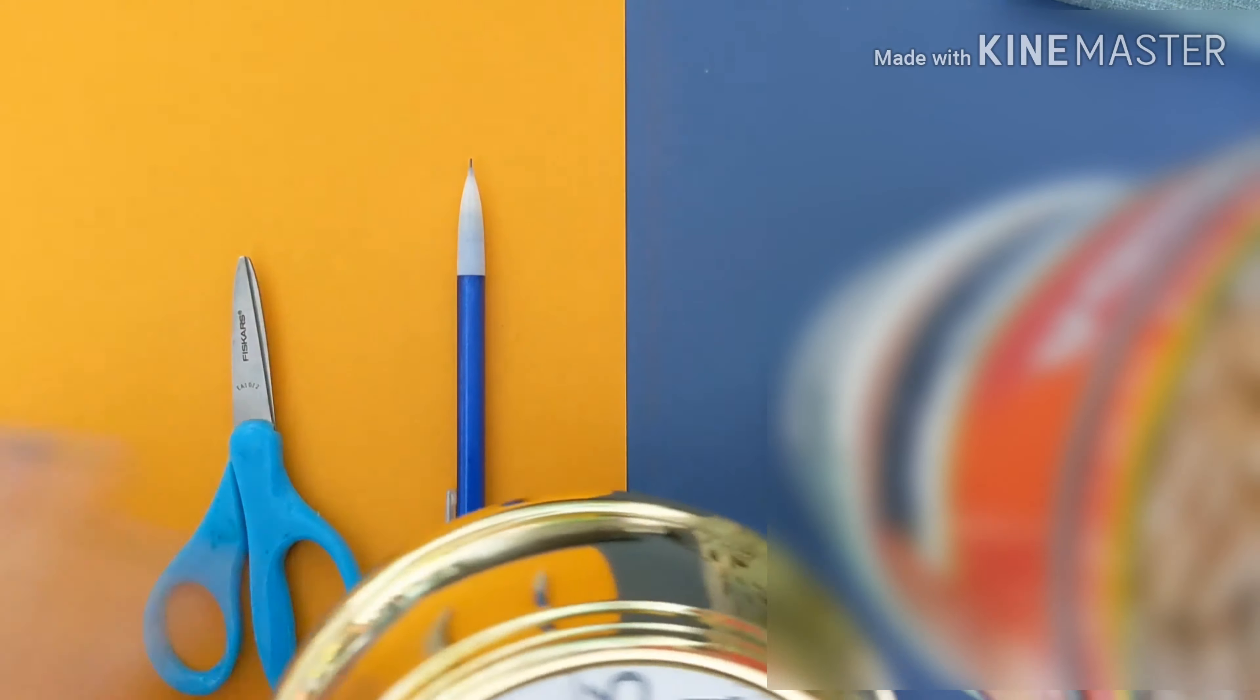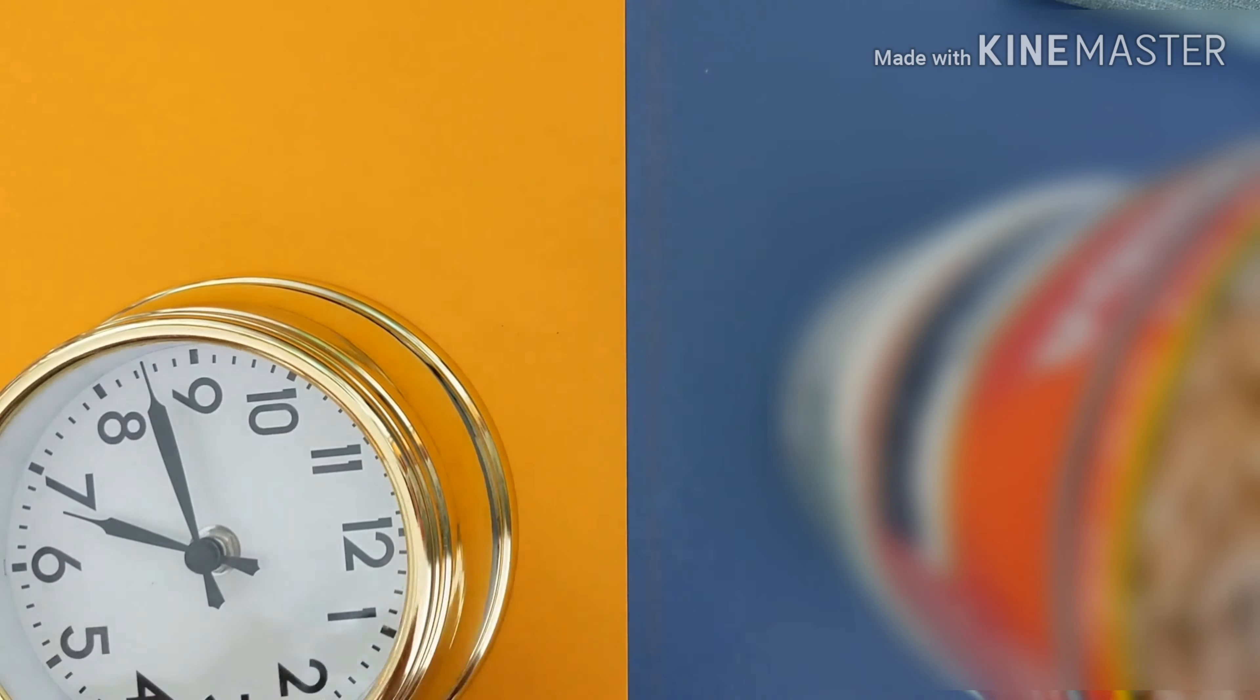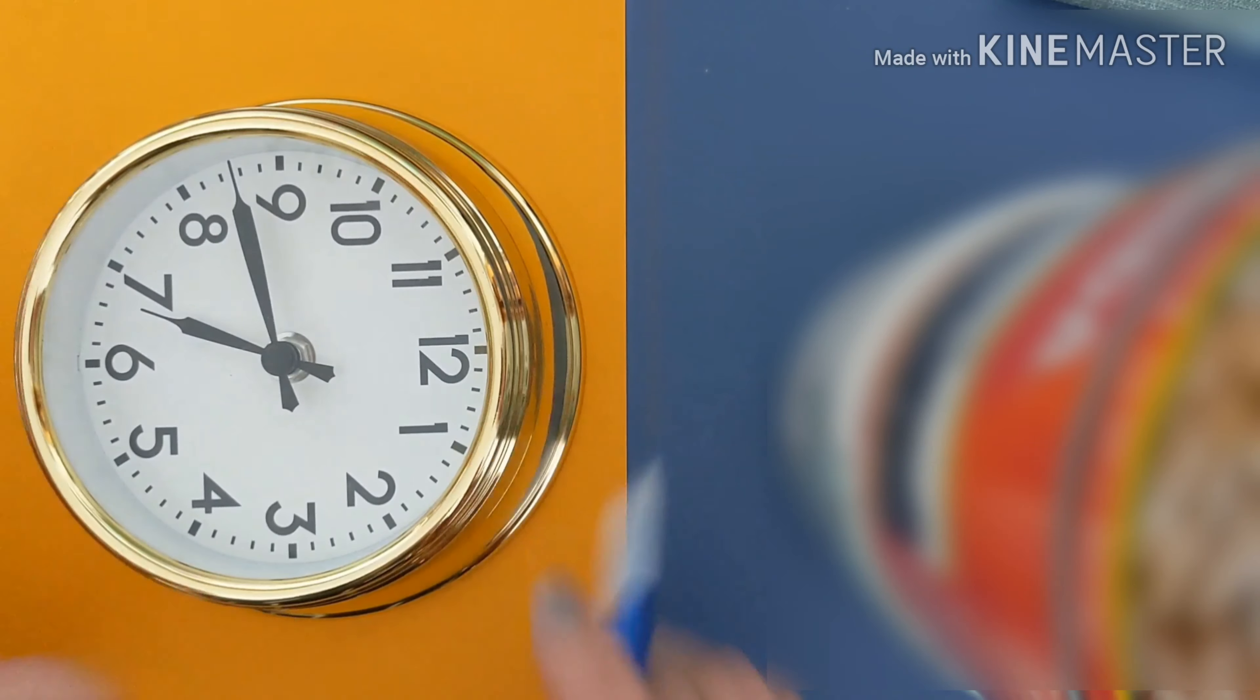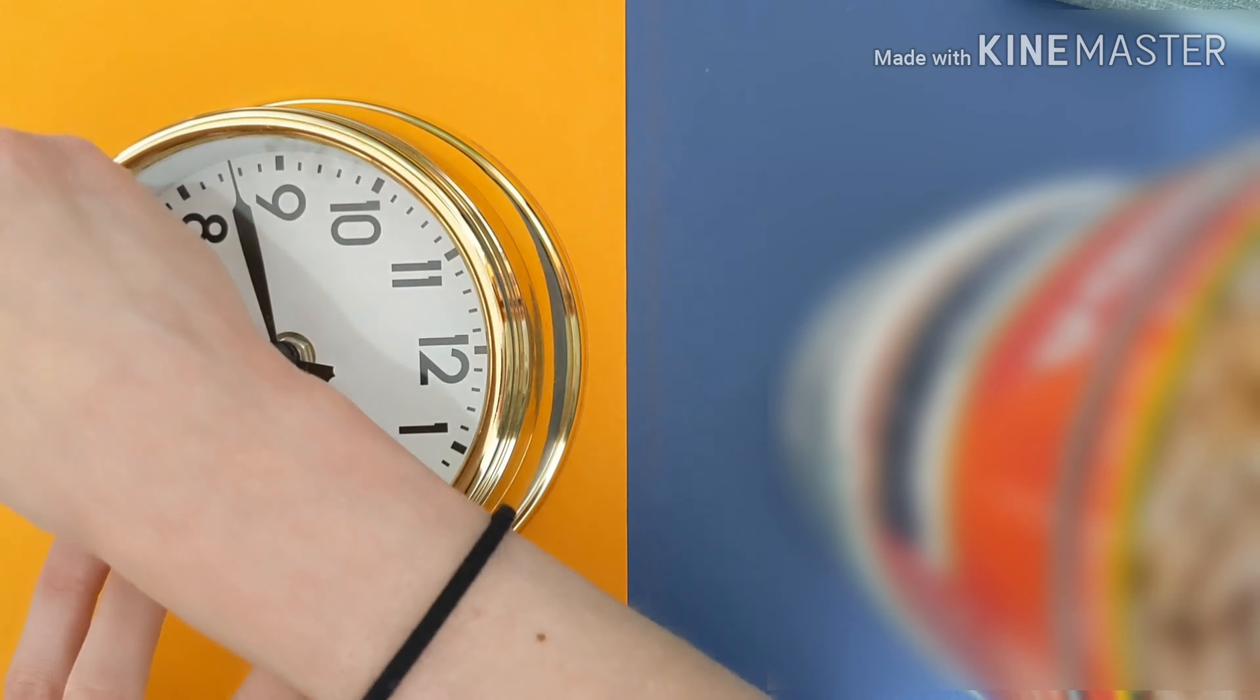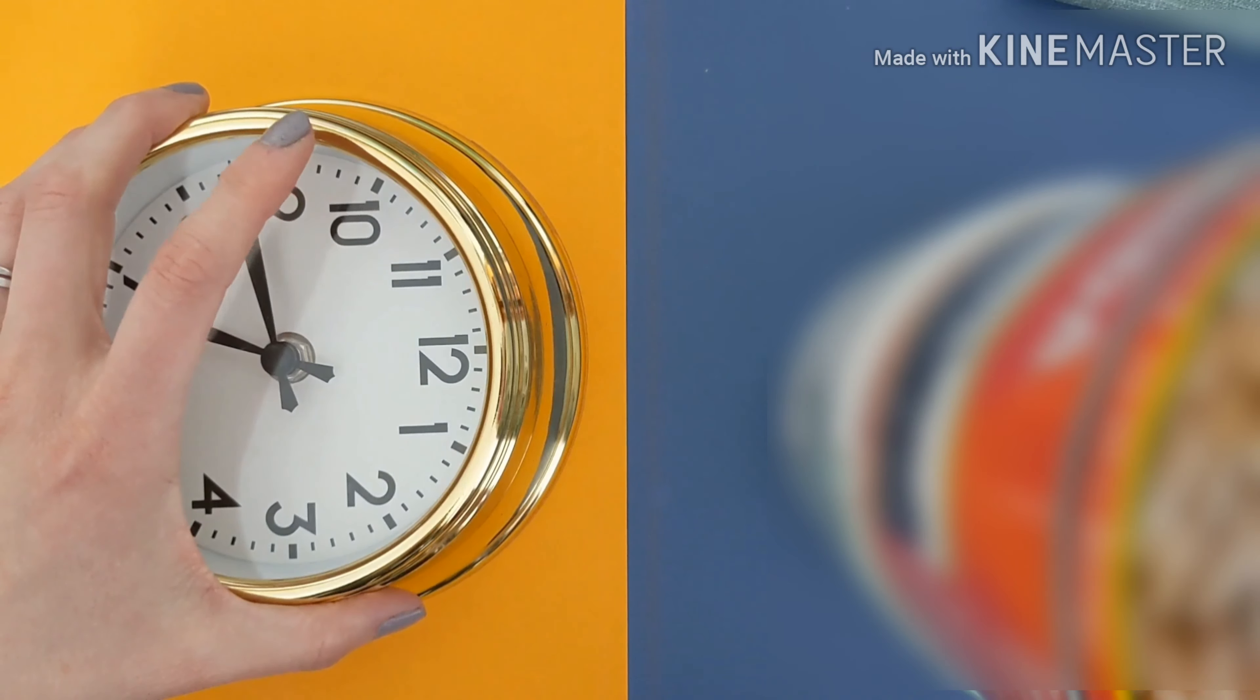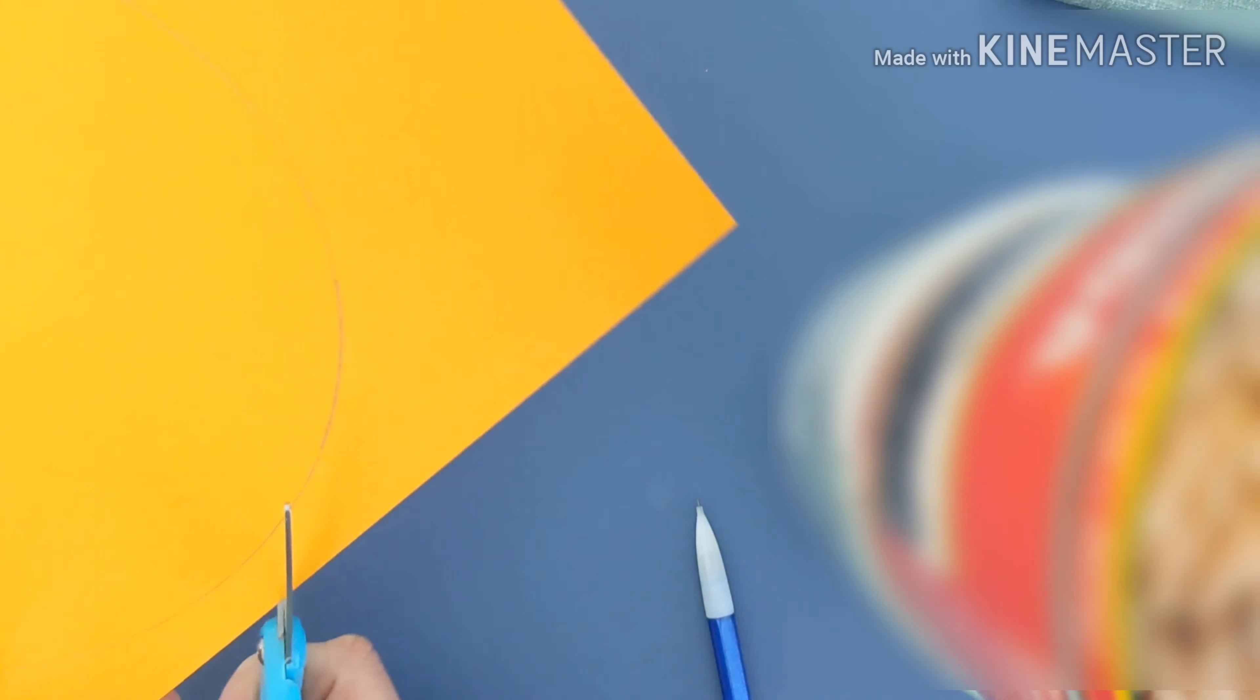Okay, you're going to put your round object right on your piece of paper, and then you're going to trace around it. Nice work. And then you can put that to the side. Good. Now pick up your scissors, and I want you to cut out that circle. Be very careful to cut right on the line.